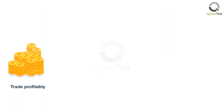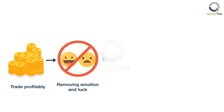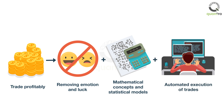The best chance to trade profitably in the market is by removing emotion and luck. The role of luck can be minimized or removed by using thoroughly tested methods which are based on sound mathematical concepts and statistical models. These methods often involve automated execution of trades to remove the role of emotion from trading.